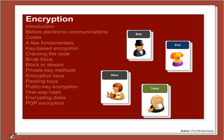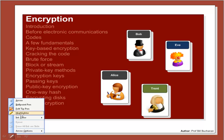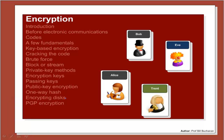This is part of a series of lectures on security, and this lecture focuses on encryption. The main areas we will look at are: before electronic communications, some examples of codes, a few fundamental areas, key-based encryption, cracking the code and brute force, block or stream encryption, the main private key methods, encryption keys, how we pass encryption keys, public key encryption, one-way encryption, encrypting disks, and finally PGP encryption.